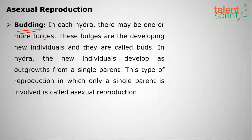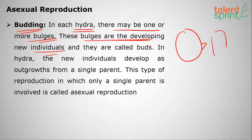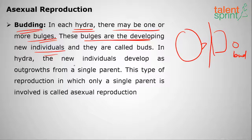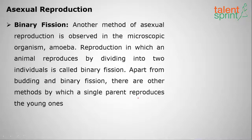The first type of asexual reproduction is budding, seen in hydra. In hydra, there may be one or more bulges called buds — these are developing new individuals. The bud eventually separates from the parent. Since only a single parent is involved, this is called asexual reproduction.